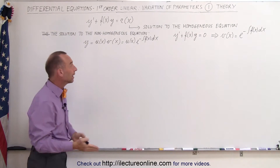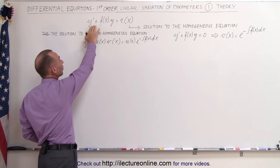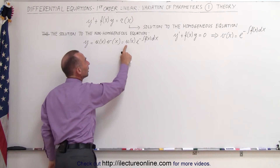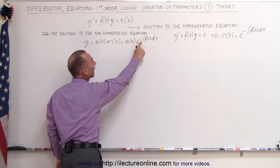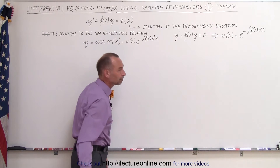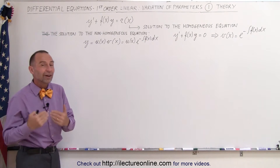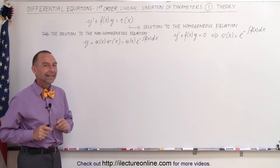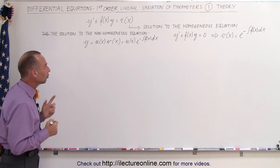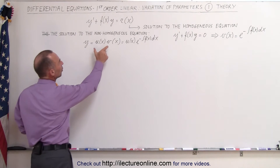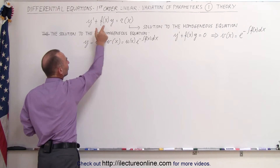Therefore we can say that y, which would be the solution of this equation, can be written as u times v, where v is e to the minus integral of f of x dx. From that, we're going to find the solution to this first-order linear differential equation by substituting u times v back into our equation.